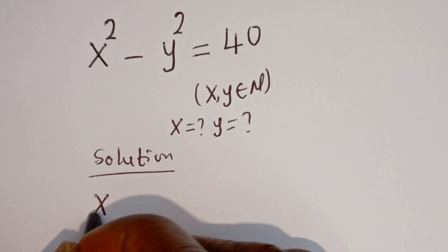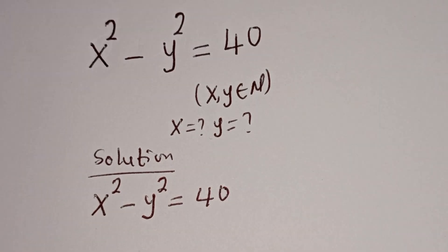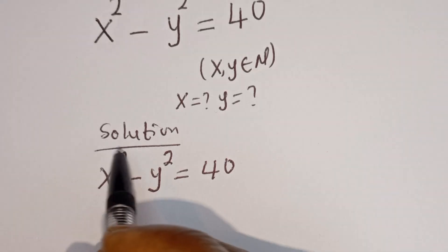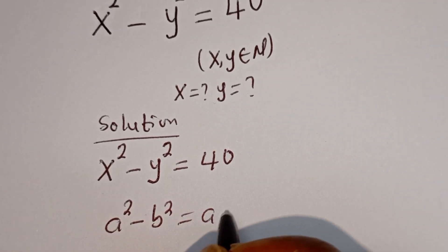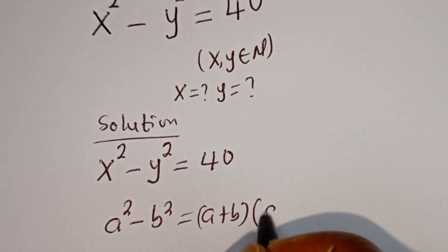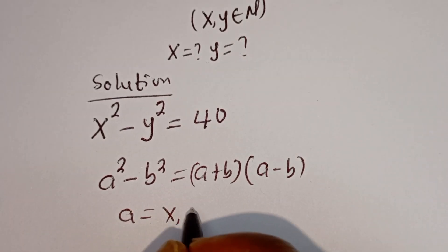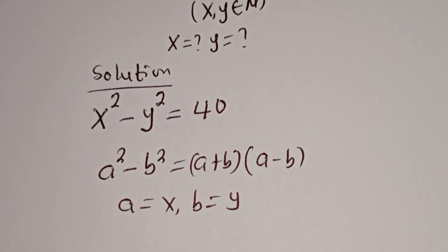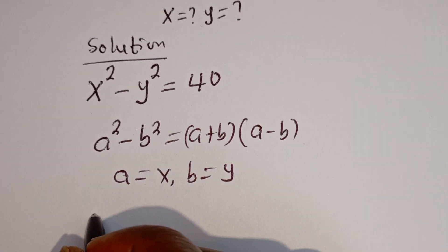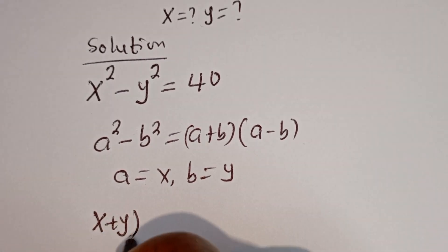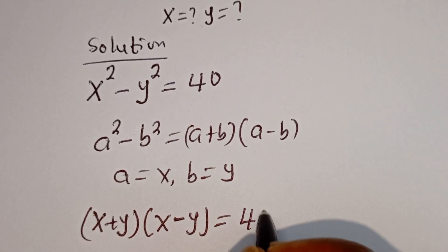We have x squared minus y squared is equal to 40. This is in the form of a difference of squares. Take note that a squared minus b squared is equal to (a plus b)(a minus b). Here a is equal to x and b is equal to y. So this equation becomes (x plus y)(x minus y) is equal to 40.